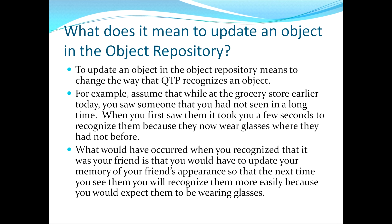This moves us to the first topic: what does it mean to update an object in the object repository? To update an object means to change the way that QTP recognizes an object. For example, assume that at the grocery store you saw someone you hadn't seen in a long time. When you first saw them it took a few seconds to recognize them because now they wear glasses where they had not before. You would have to update your memory of your friend's appearance so that next time you see them you will recognize them more easily.